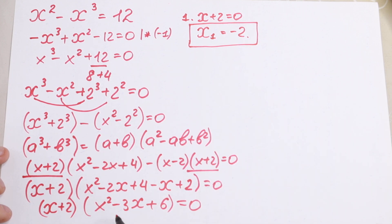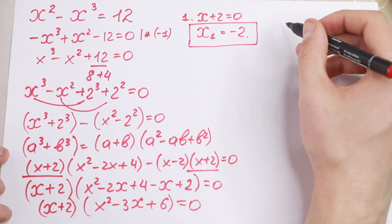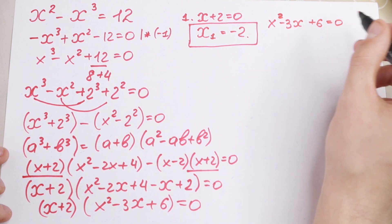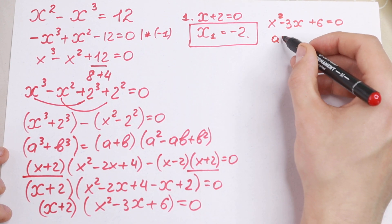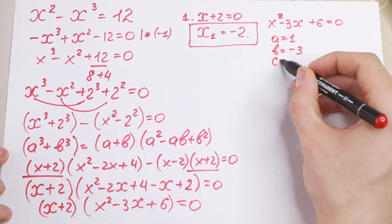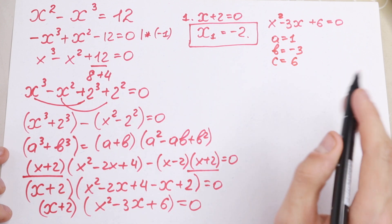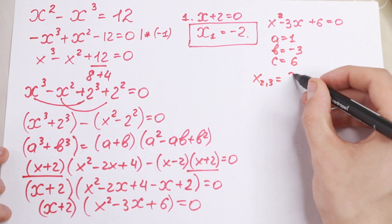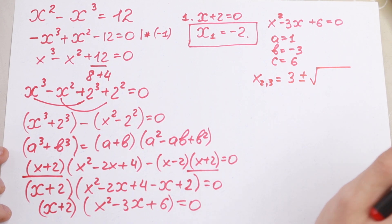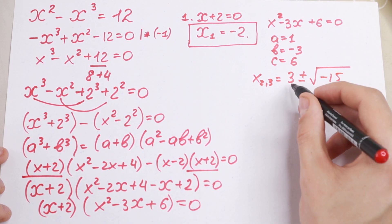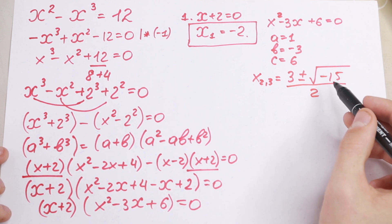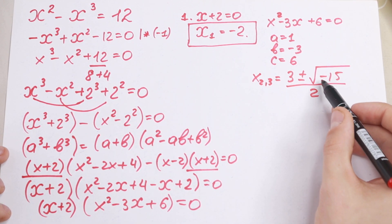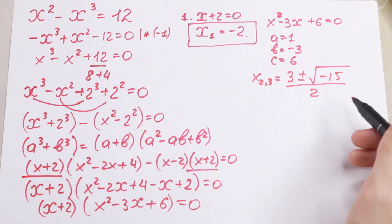Now let's find the second and third roots by solving the quadratic x² − 3x + 6 = 0. We have a = 1, b = −3, and c = 6. Plugging into the quadratic formula gives x = (3 ± √(9 − 24)) / 2 = (3 ± √(−15)) / 2. Since we have a negative under the square root, these will be complex roots.